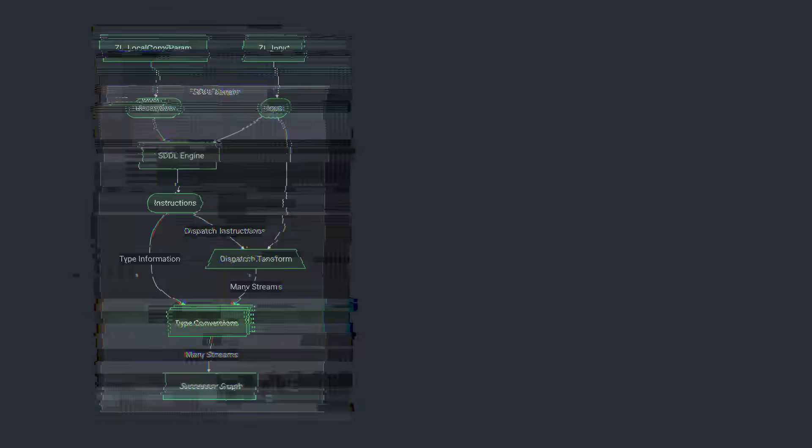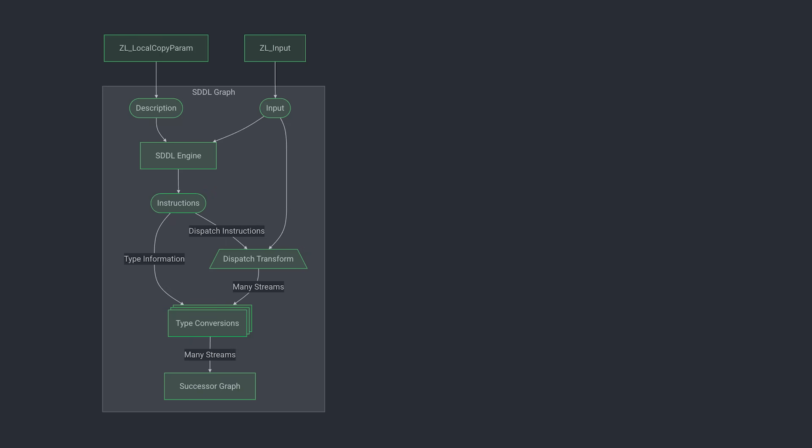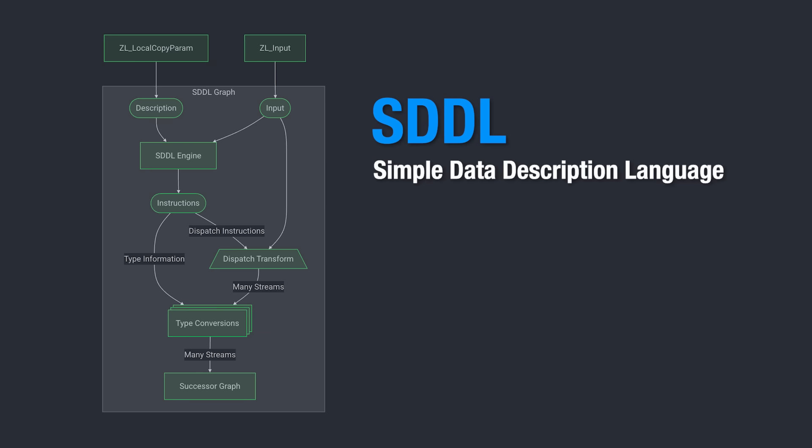Here's how it works. First, you describe the structure. You start with a schema using something called SDDL — the Simple Data Description Language. It tells OpenZL how bytes map to actual fields and types.